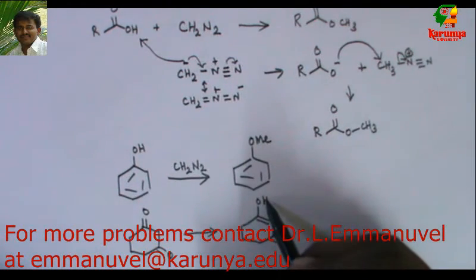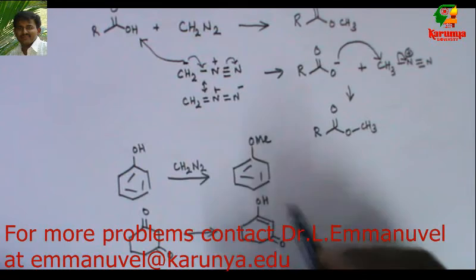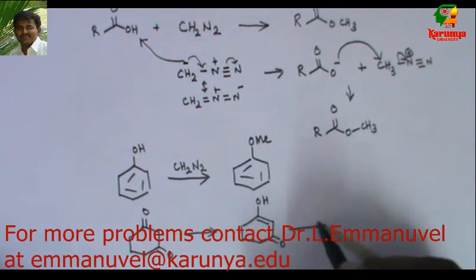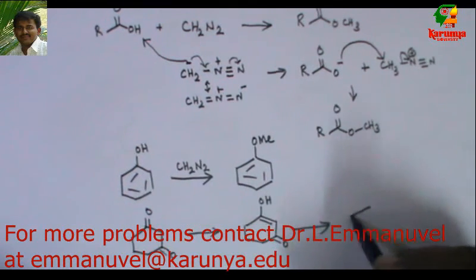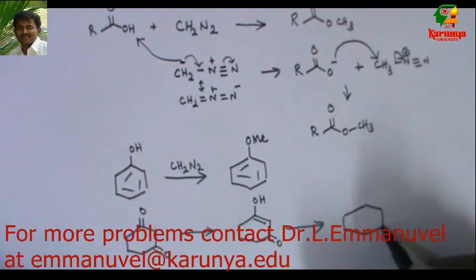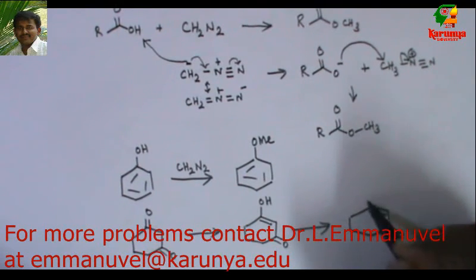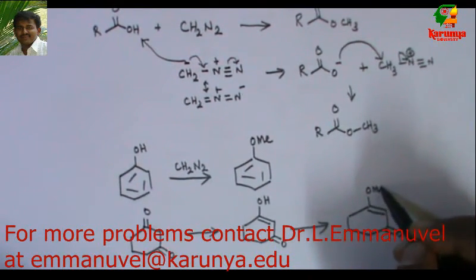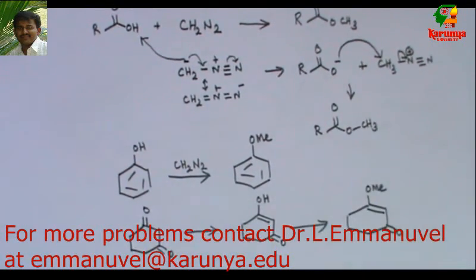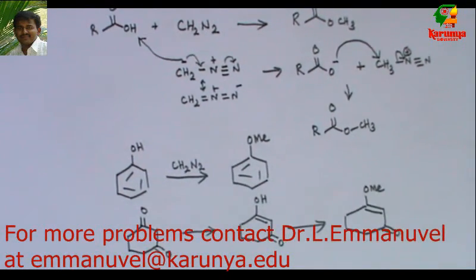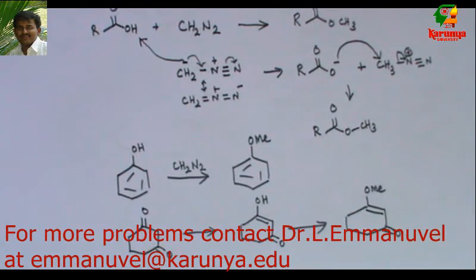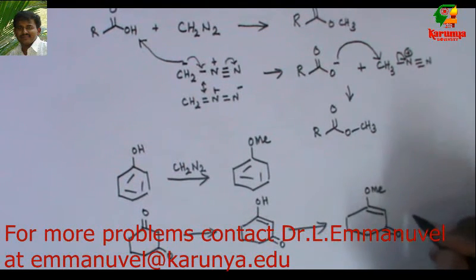This OH in the enol form of a dione is acidic and can also be methylated by diazomethane. This problem was asked in a CSIR exam — I forgot the year.